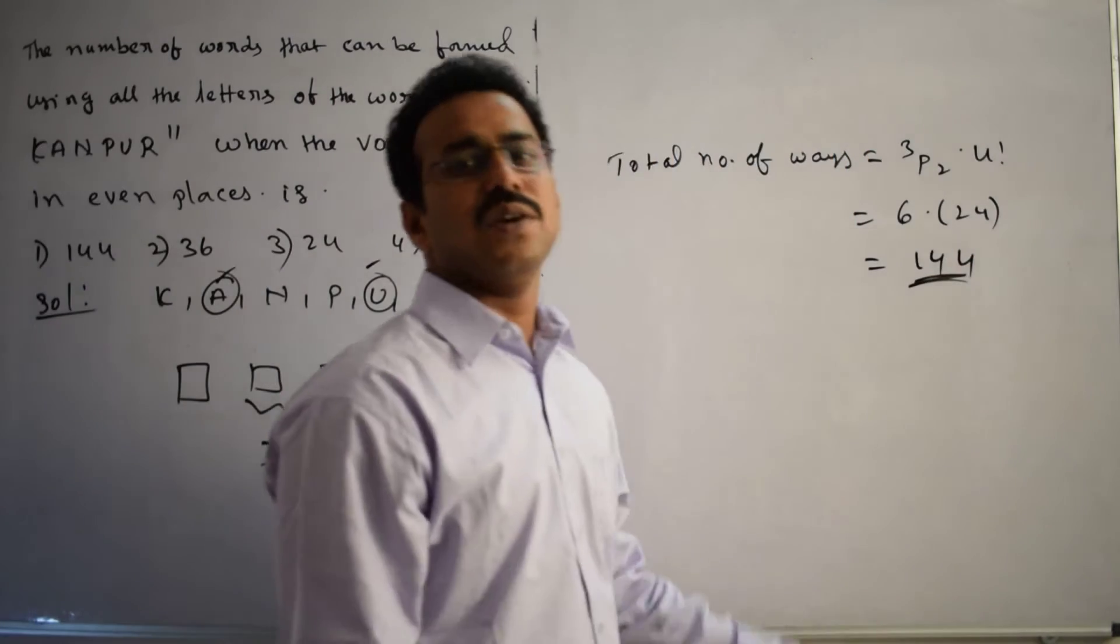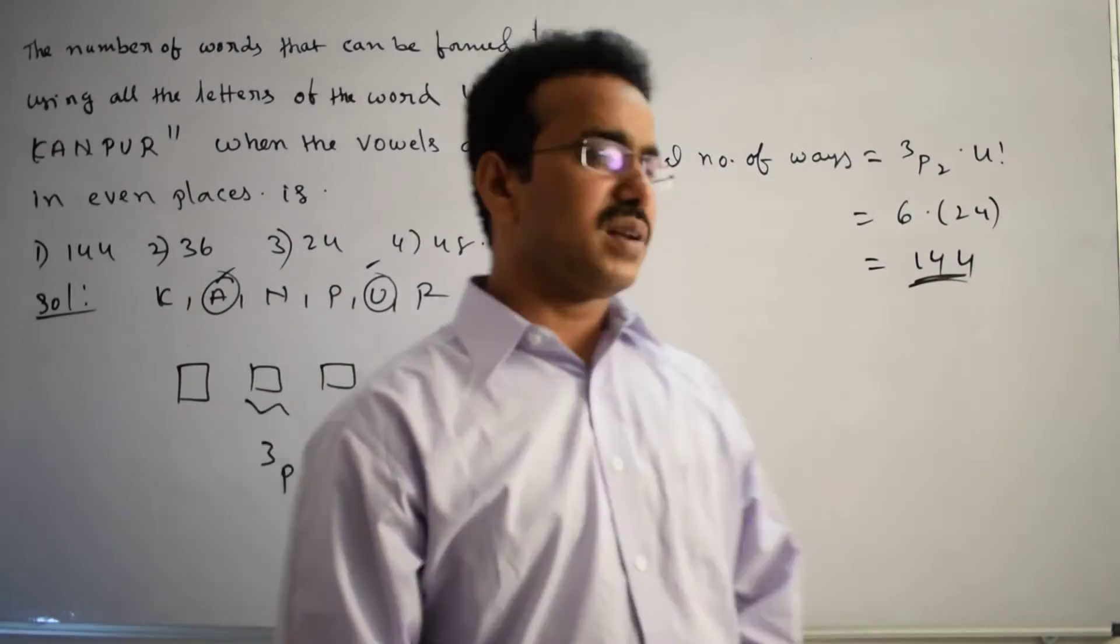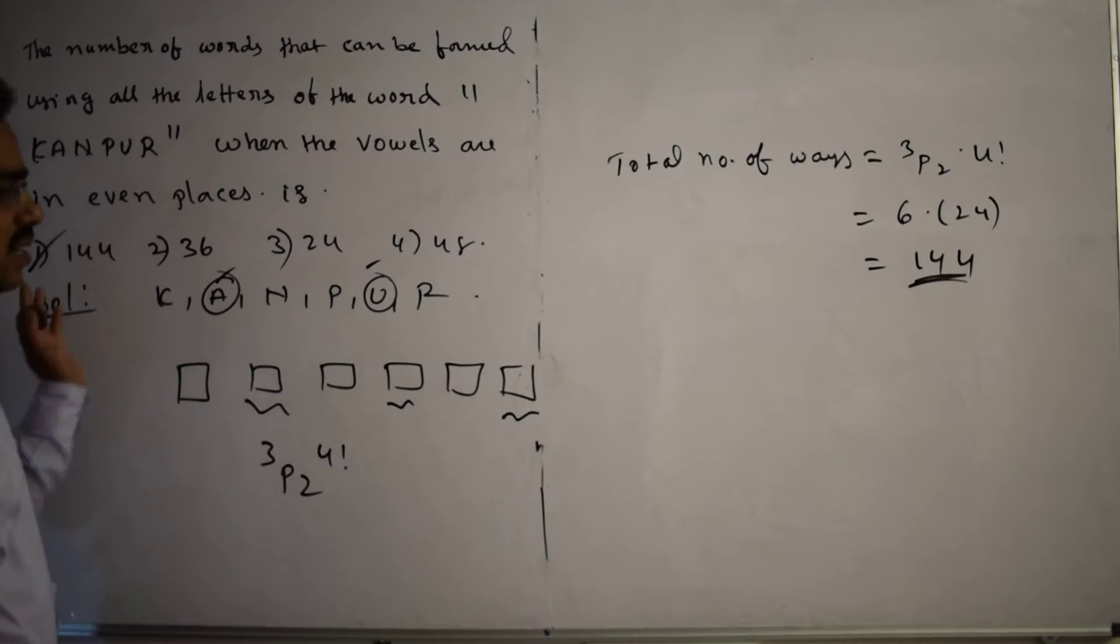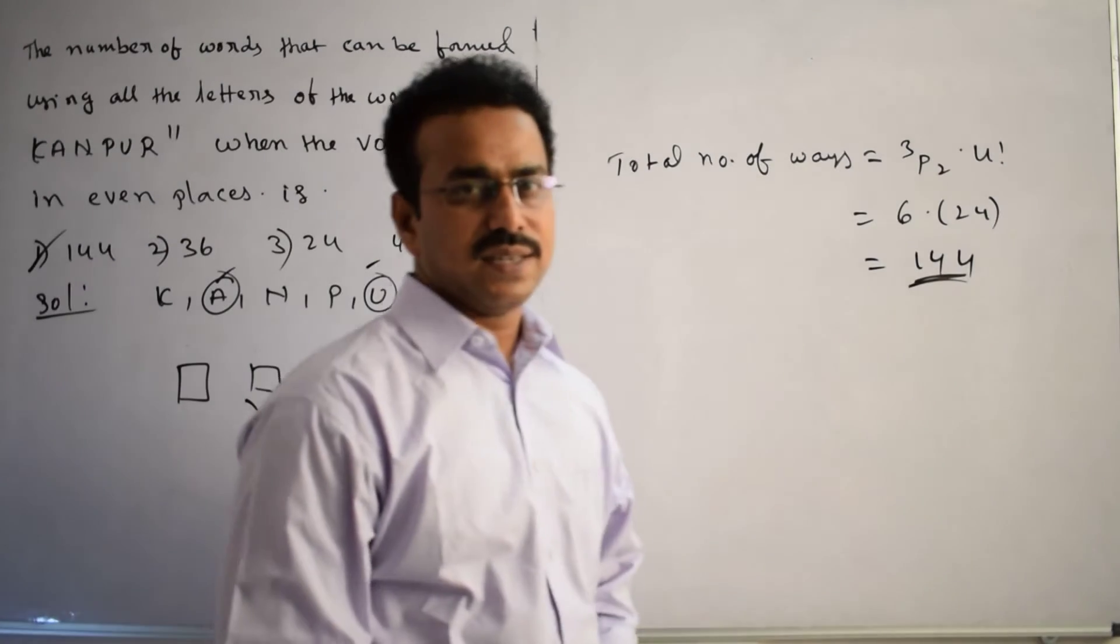These are the required number of ways. Now let's compare with the given options. What are the given options here? Yeah, first option only correct, 144. Rest of the options are incorrect.